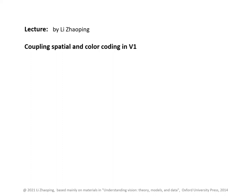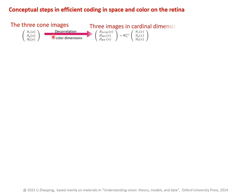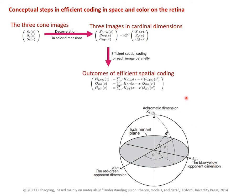Coupling spatial and colour coding in V1. Let's quickly recall how this is done in the retina. We start with three cone images — red, green, and blue — and then we decorrelate them in colour dimensions into a luminance image and two chromatic images. One is a red-green contrast chromatic image and the other is a blue-yellow contrast chromatic image. Then we do spatial coding in parallel for these three images.